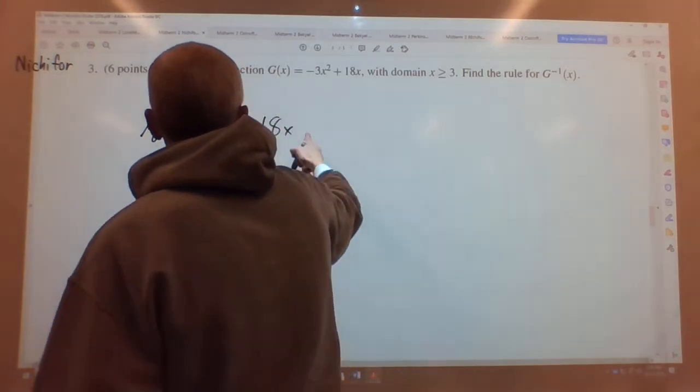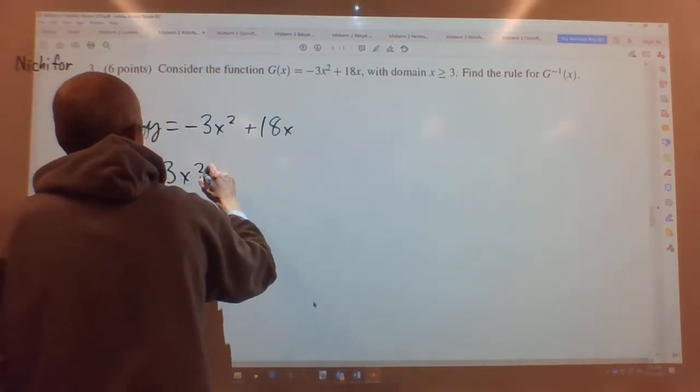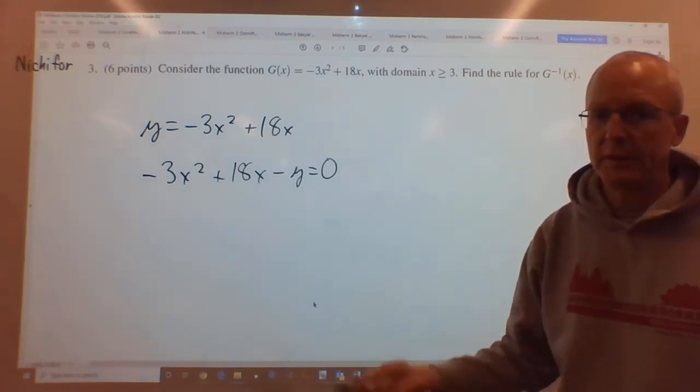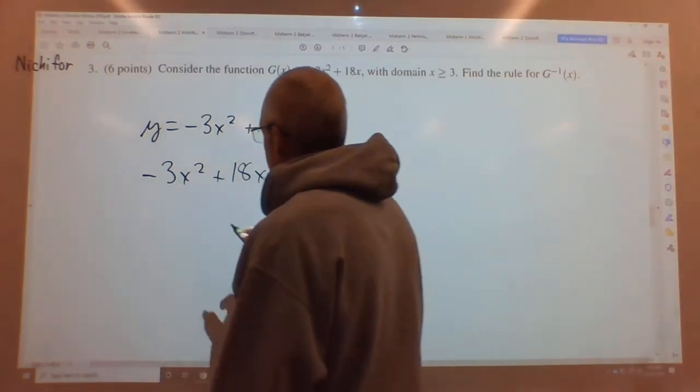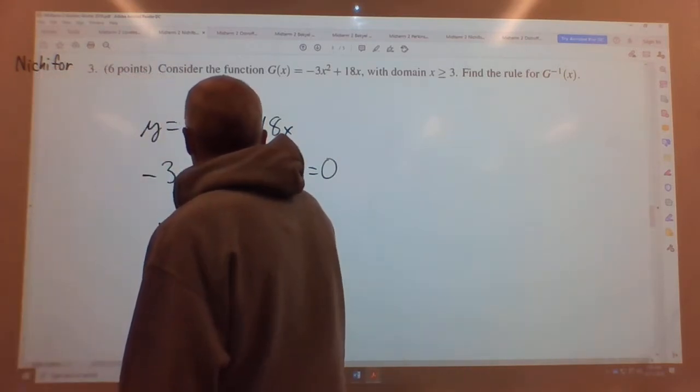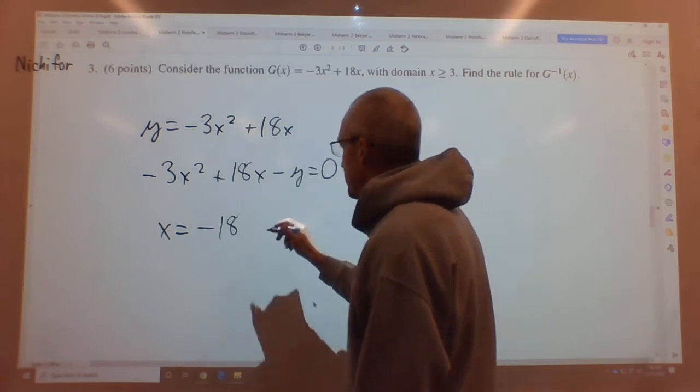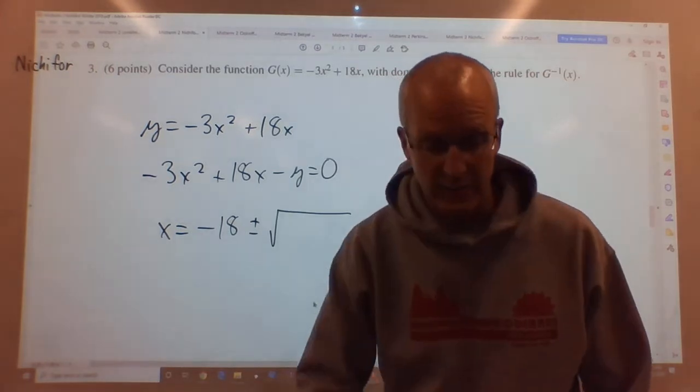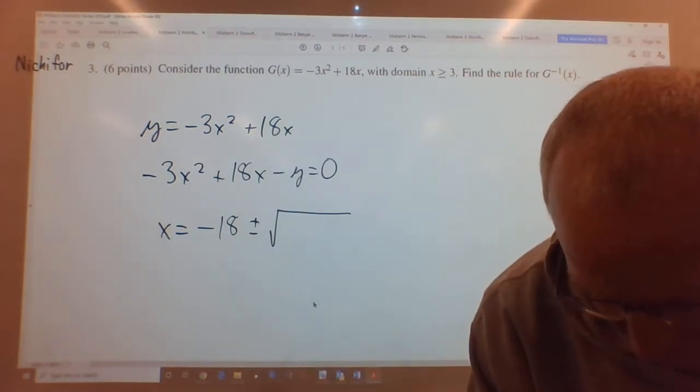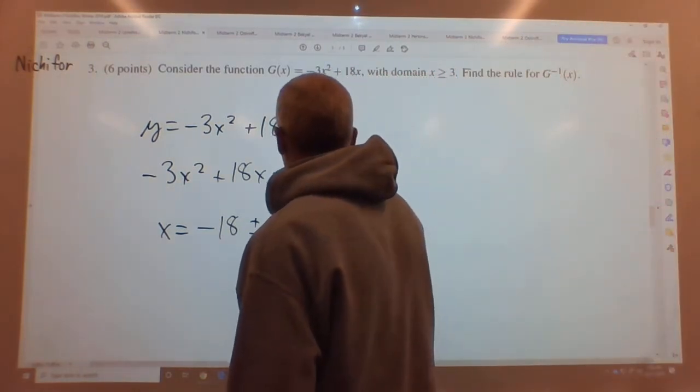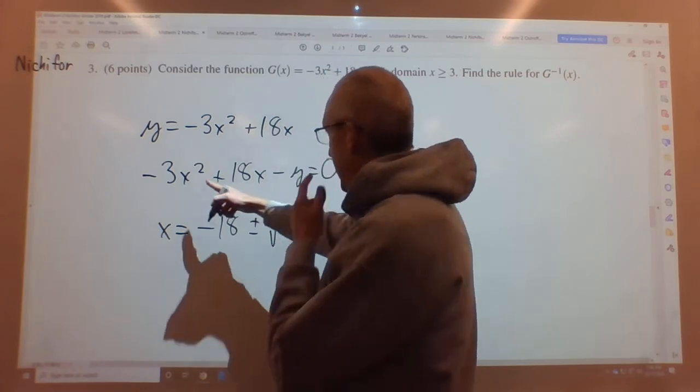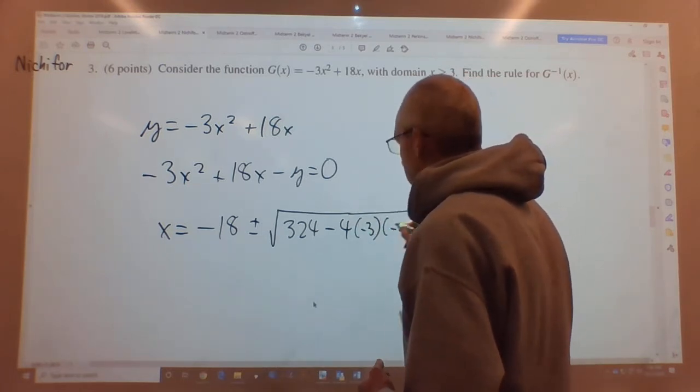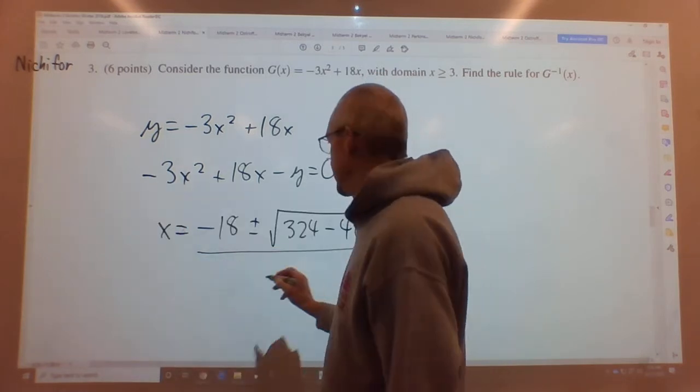So let's put the y over here. So what we end up having is negative 3x squared plus 18x minus y equals 0. We want to solve for x and we just use a quadratic formula. So x equals negative b, so negative 18, plus or minus square root of b squared. 18 squared is 324. So 324 minus 4a is negative 3. C is negative y. Divided by 2a. 2a is negative 6.